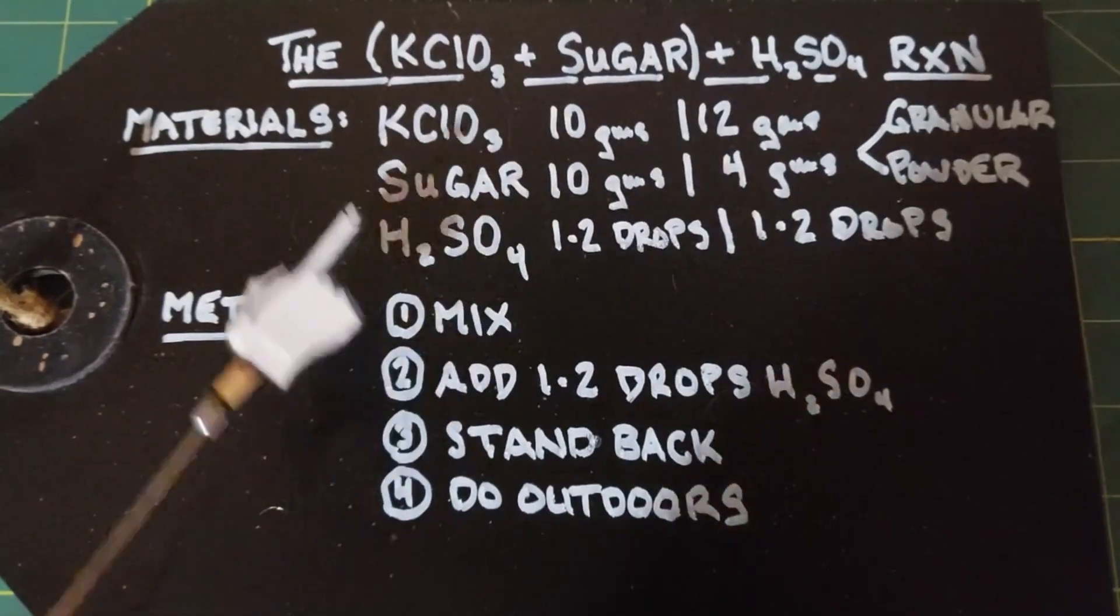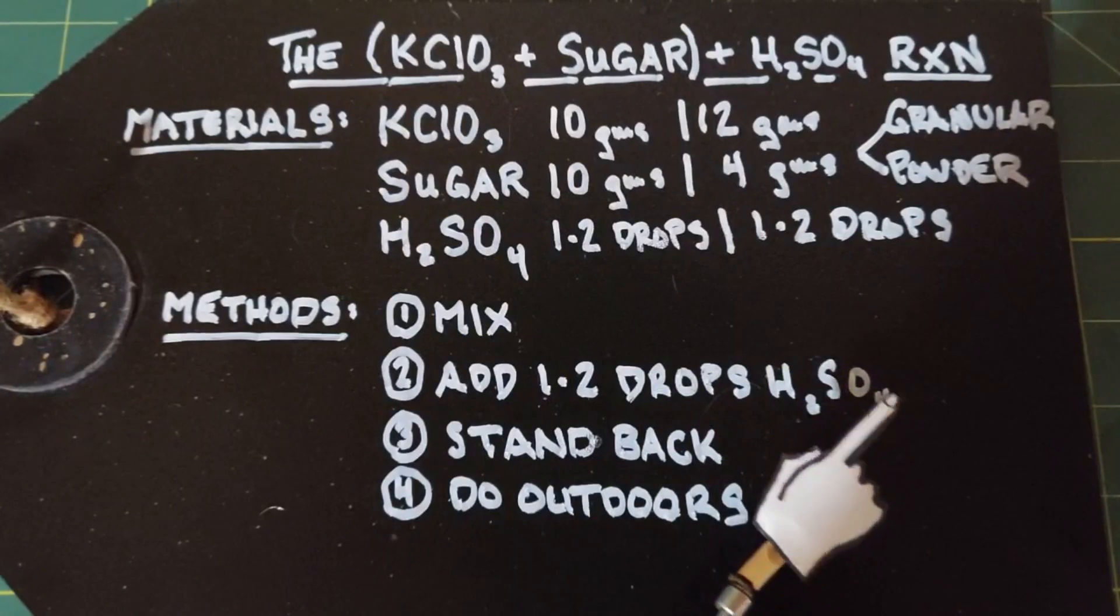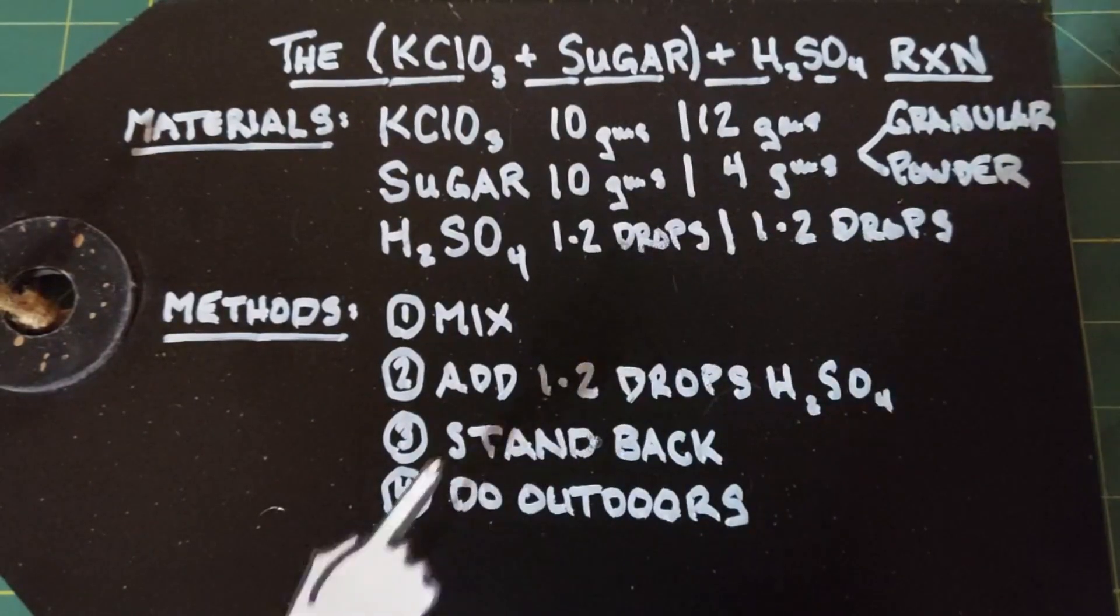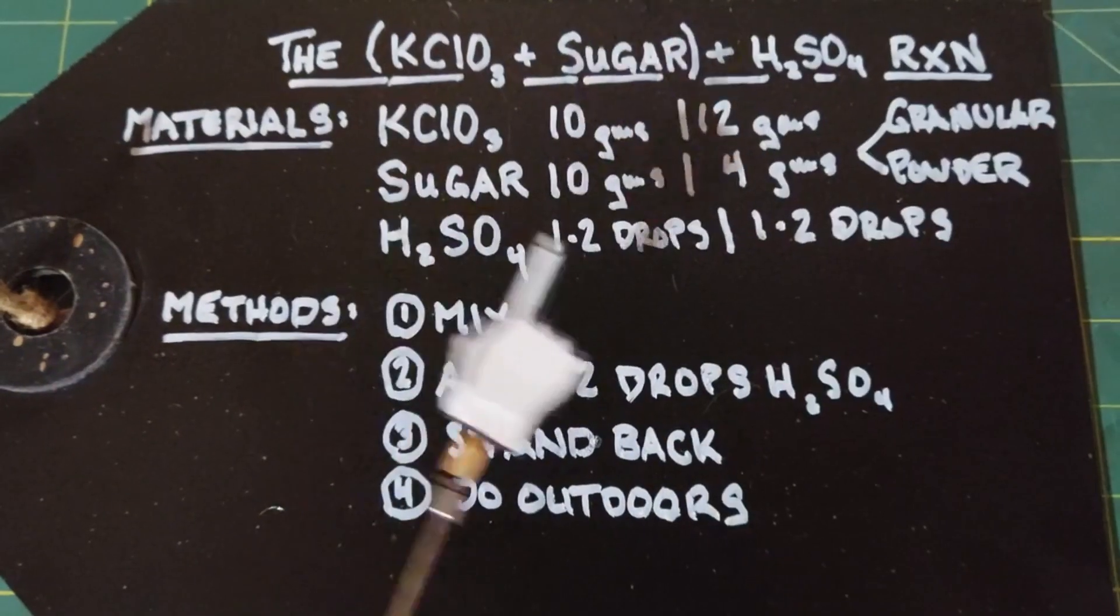How are we going to do this? Well, we mix these two together and then add one or two drops of sulfuric acid on the top. I said it would be simple, and then you stand back and do this outdoors because it does produce a lot of heat and smoke. All right, let's go ahead and do this.